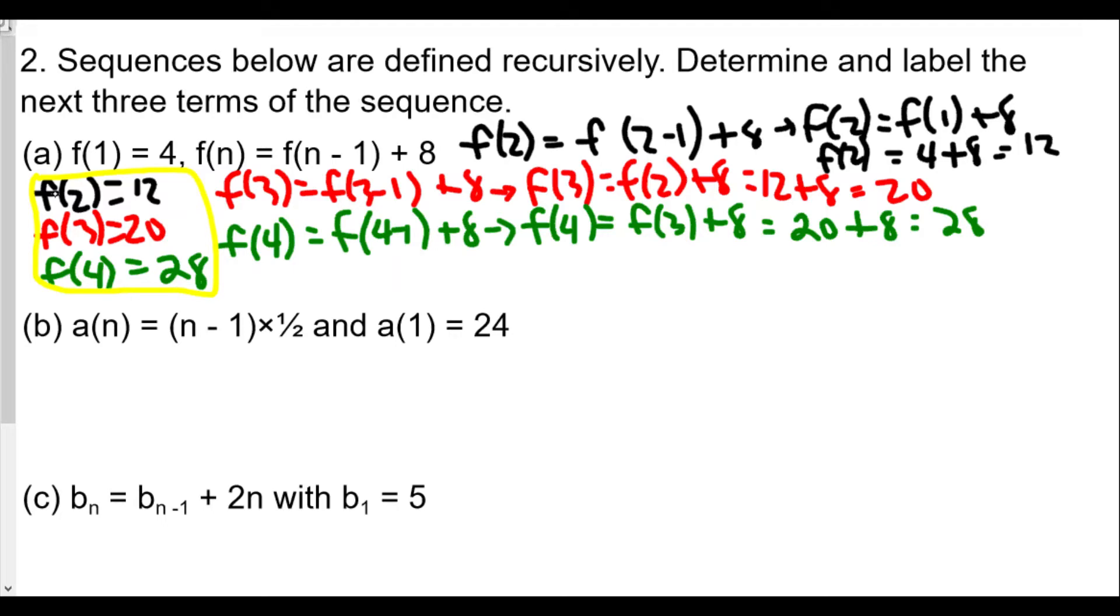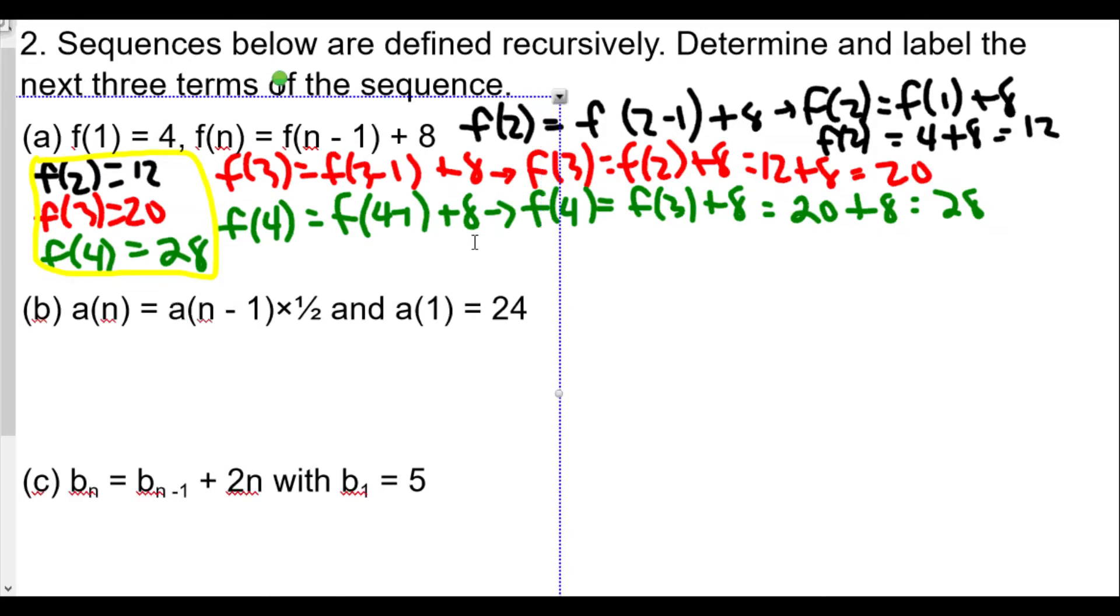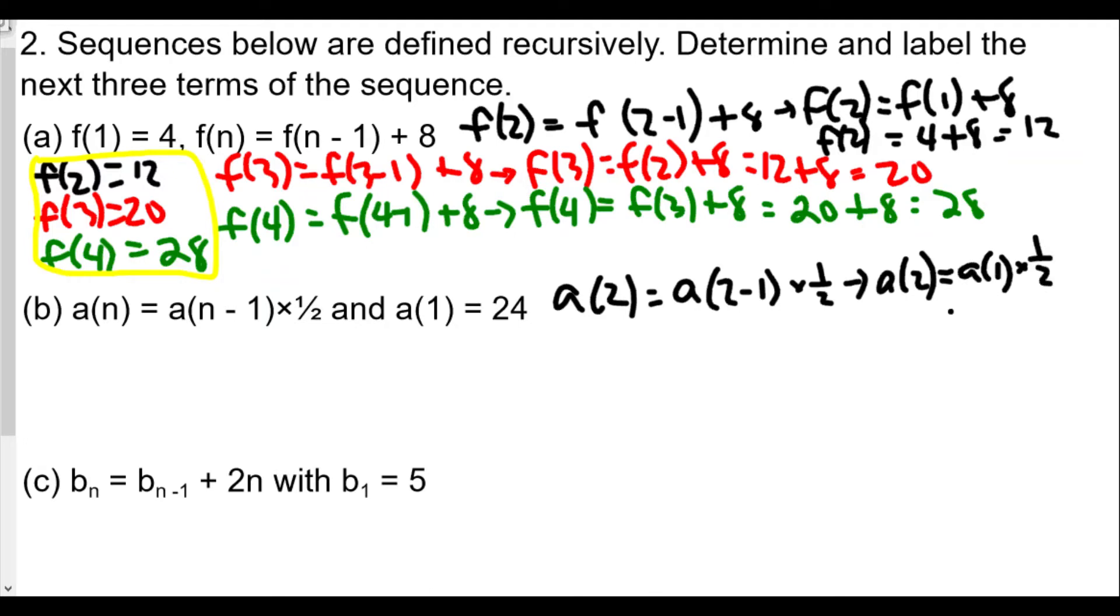Okay, now for B. B says we have a sub n or a(n) equals—this should be a here—a(n-1) times 1/2. And a1 equals 24. So we'll begin with a2, because a1 is 24. a2 equals a(2-1) times 1/2. And a(2-1) is really going to be a1. So we have a2 equals a1 times 1/2. In this case, a1 we know is 24, so 24 times 1/2 is 12. And so our second term, a2 equals 12.